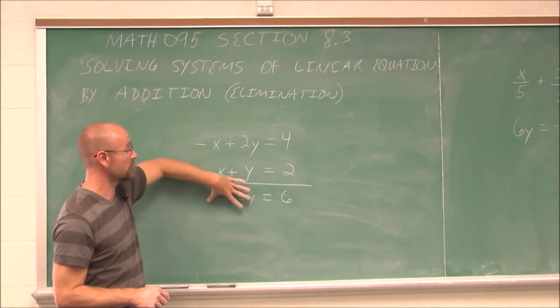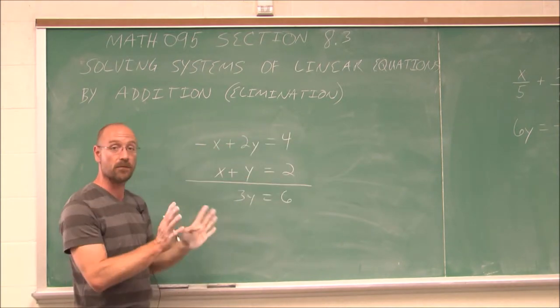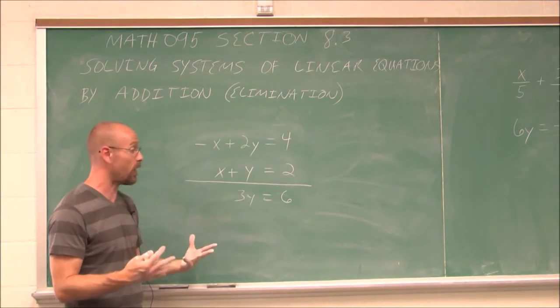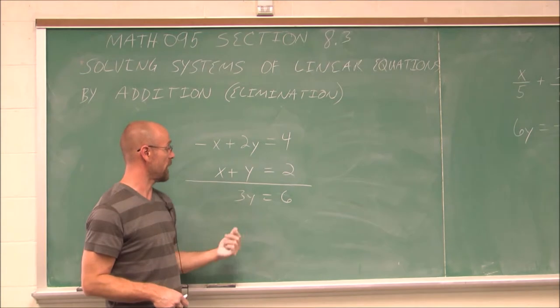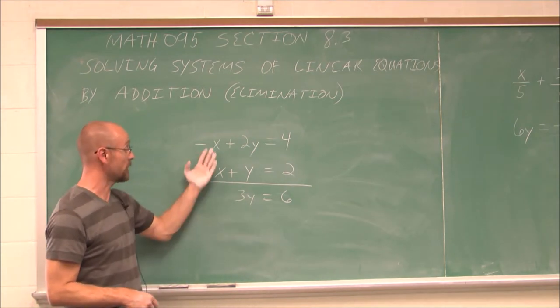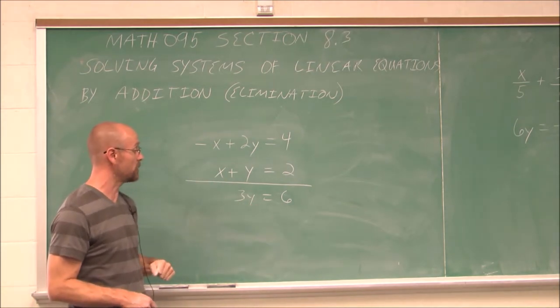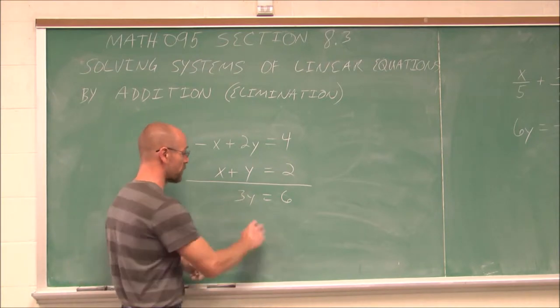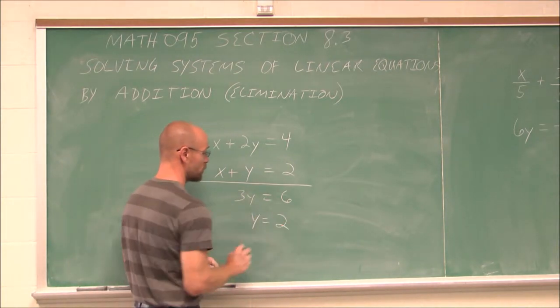Now, because what I did to this side, I did to that side, I didn't violate any rules of equality. This is equal to that. And now I can solve for y because I eliminated the x. It's a single variable I can solve for. So I'm going to divide both sides by 3, and I get y equals 2.